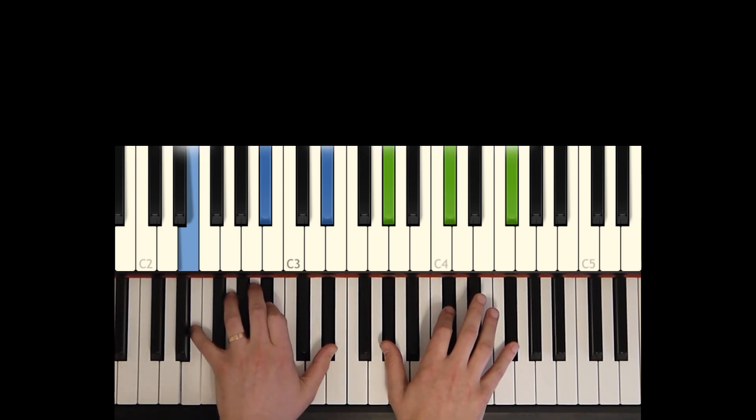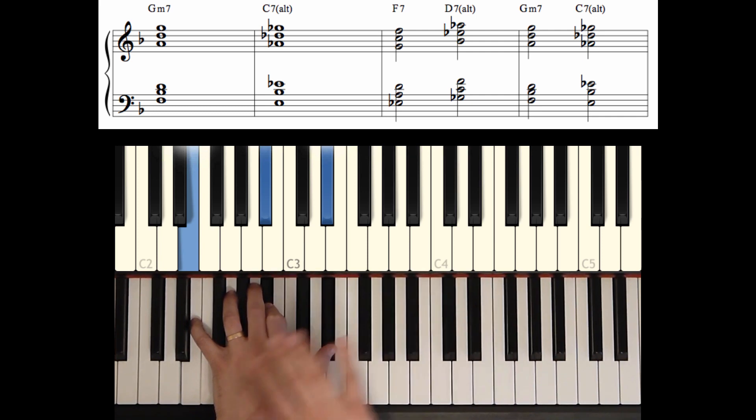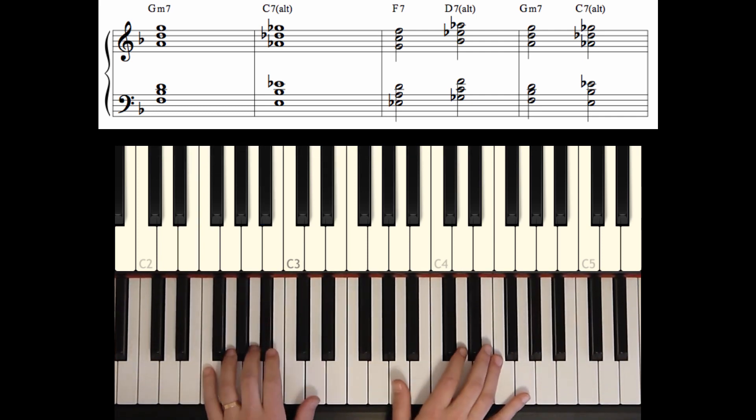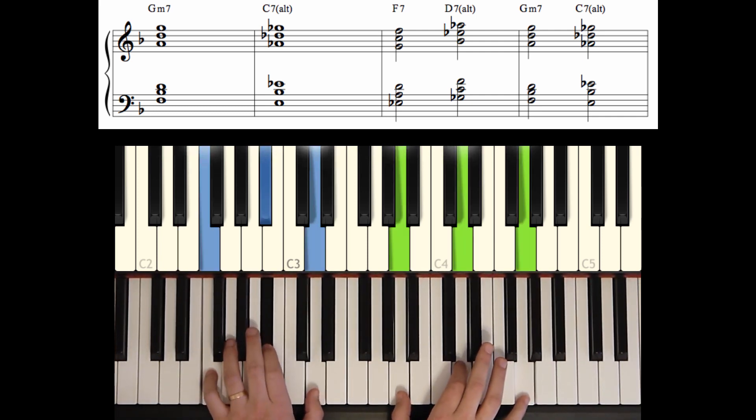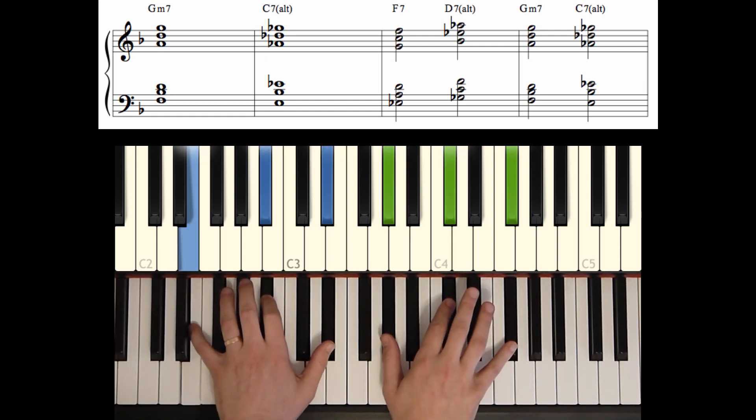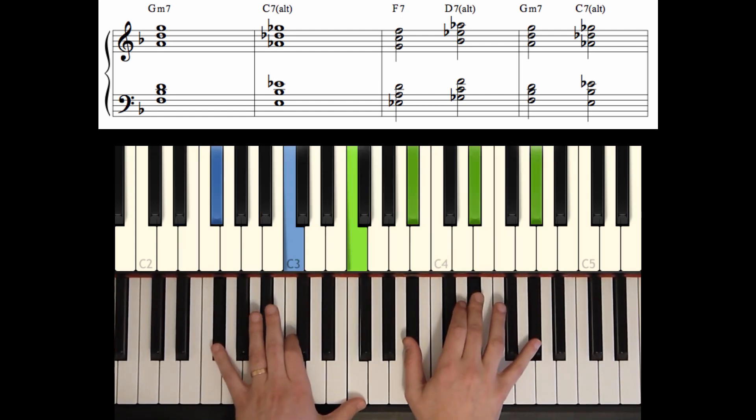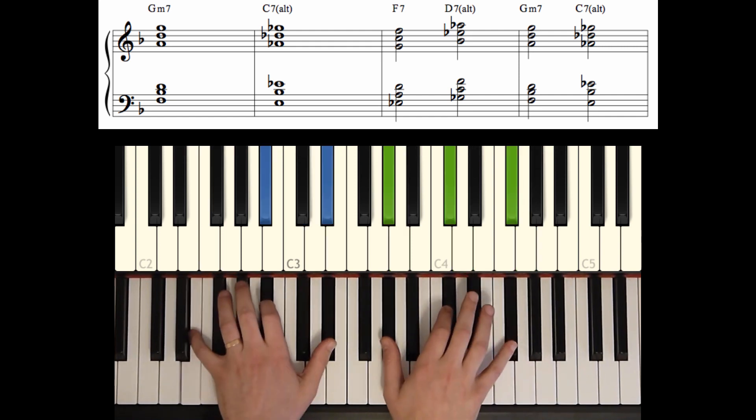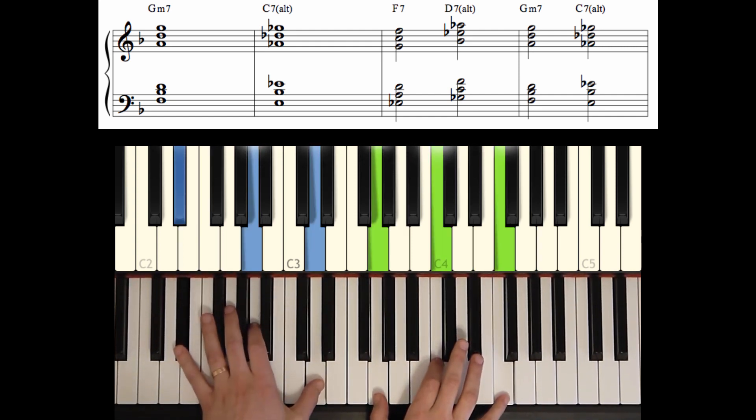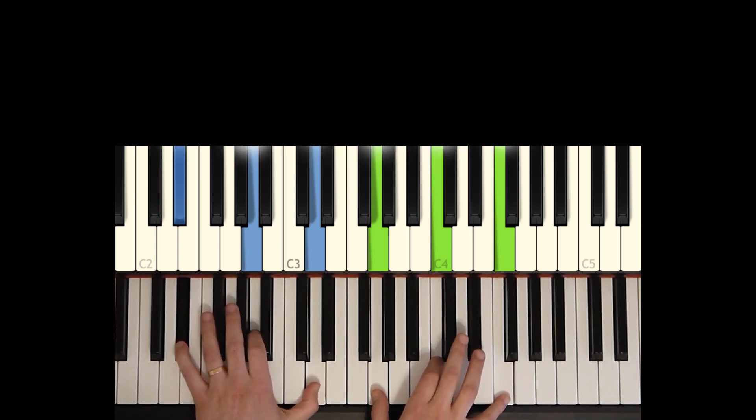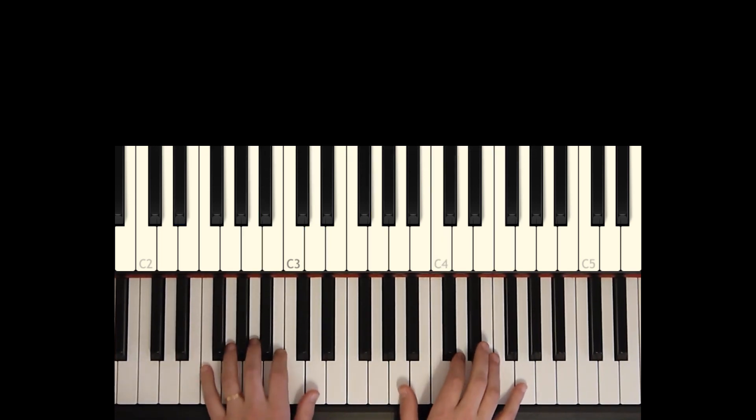So again moving from C7 to C7 altered, we get that sound. So there's two different ways we can apply this to the last four measures. We can either completely replace the C7 with the C altered, and that would sound like this. C7 altered, F, D, G, C7 altered.